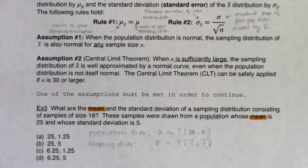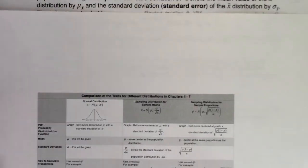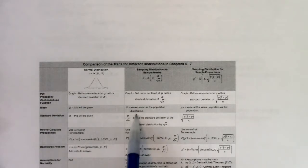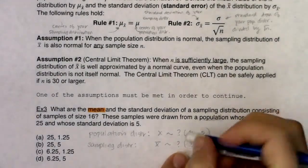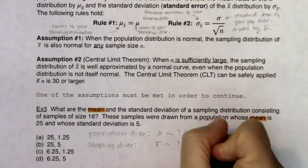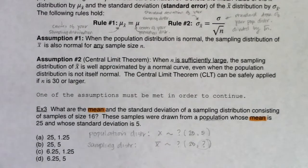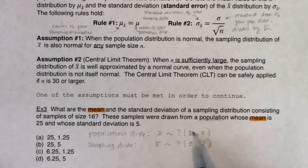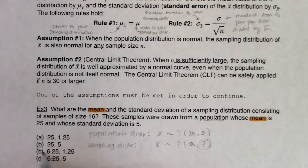To find the mean of the sampling distribution, the rule says it's the same as the population center. So if the population had an average of 25, the sampling distribution should also have an average of 25. We saw this in example 1 with platelets at 8.25, and in example 2 with hockey at 9.8 minutes. So we drop 25 into the sampling distribution — that eliminates answer choices C and D.